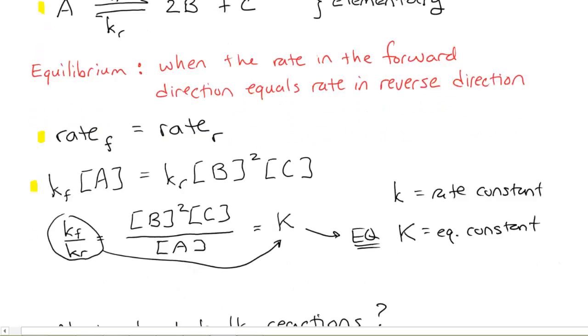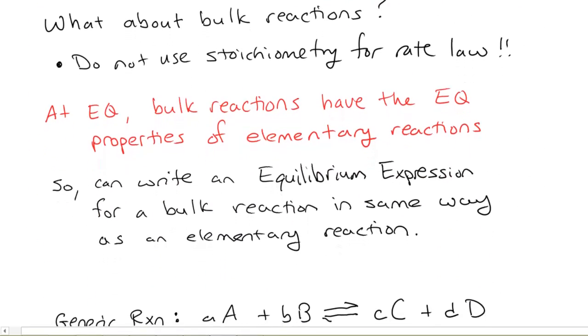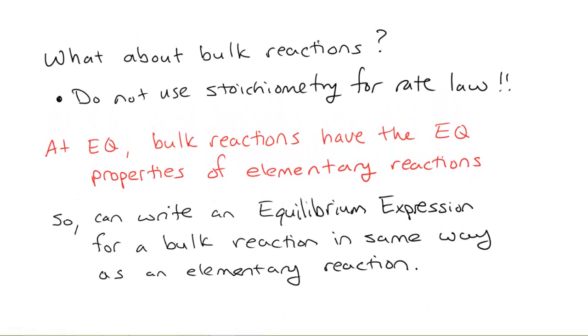Well, the question then begs, what about bulk reactions? Can we do this for a bulk reaction? And the answer you should have in your mind is no, we can't do that because those don't use the stoichiometry. They don't use the stoichiometry to create their rate laws. However, we're very fortunate in that nature has provided us this situation. When we're at equilibrium, even a bulk reaction has this property. So, there's something special about equilibrium, that elementary and bulk reactions behave the same way when they're at equilibrium.